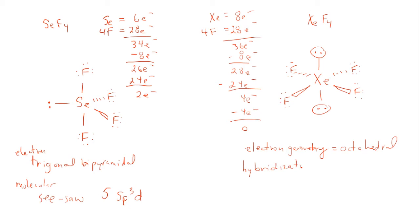For the hybridization, anything needing six electron domains requires six orbitals, so the hybridization is sp3d2. We hybridize one s orbital, three p orbitals, and two d orbitals to give us six hybrid orbitals. Then last but not least, we determine the molecular geometry.